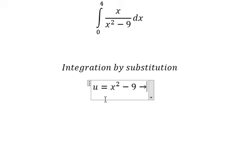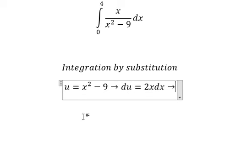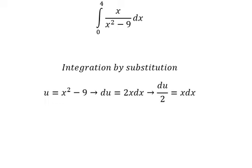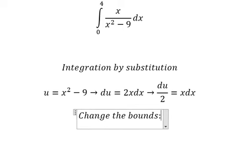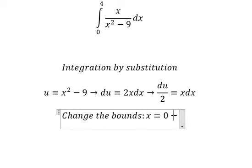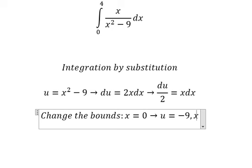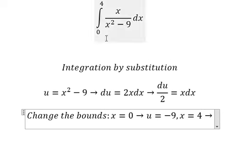Next, we need to change the bounds. When x equals to 0, we put 0 in here, so u equals to negative 9. When x equals to 4, we put 4 in here, so we have u equals to 7.